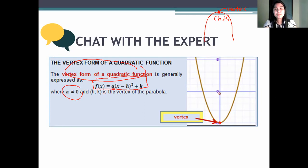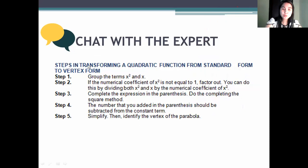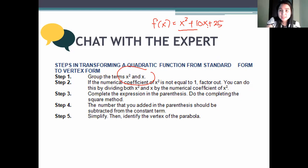How do we write a quadratic function from its standard form to the vertex form? Step number one: we group the terms x squared and x together. For example, we have f of x equals x squared plus 10x plus 25. Step number two: if the numerical coefficient of x squared is not equal to 1, we factor it out by dividing both x and x squared by that coefficient.